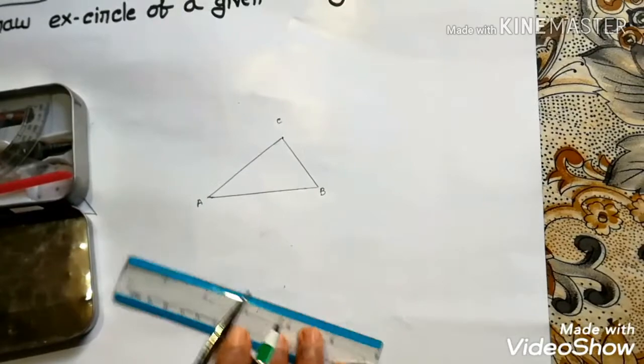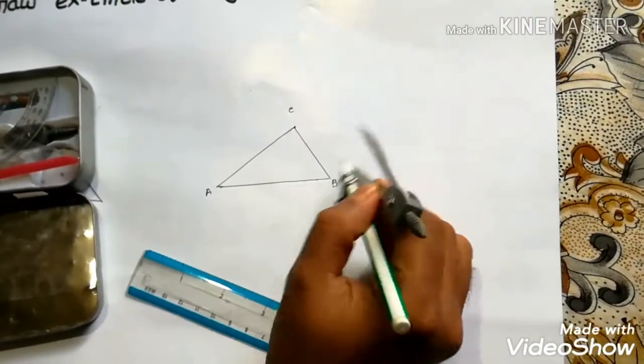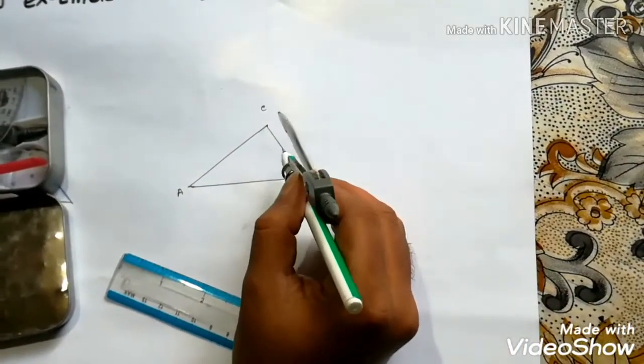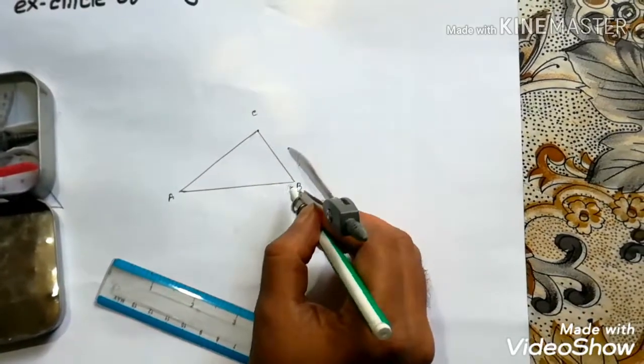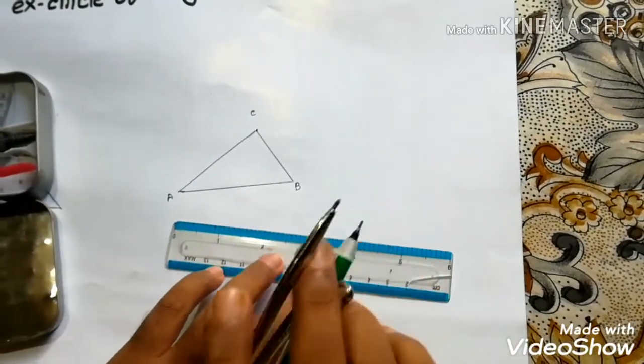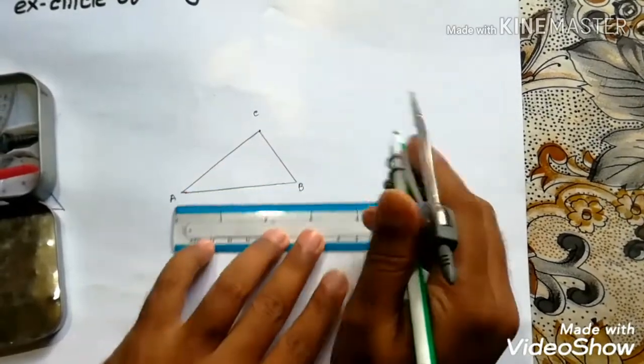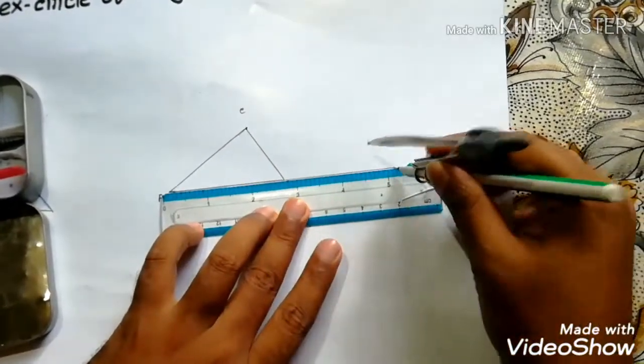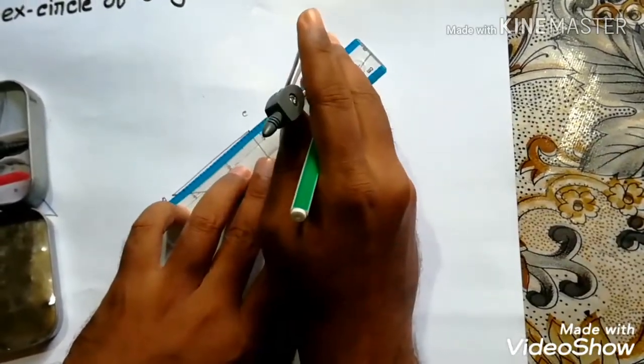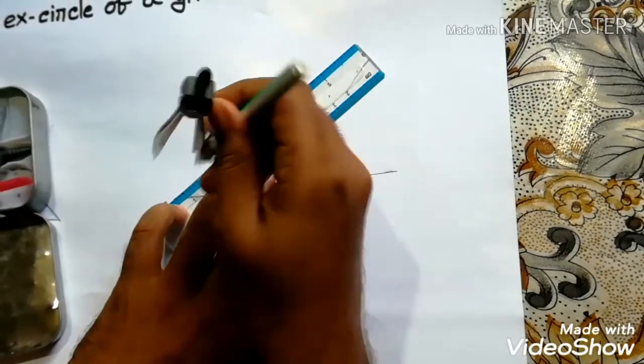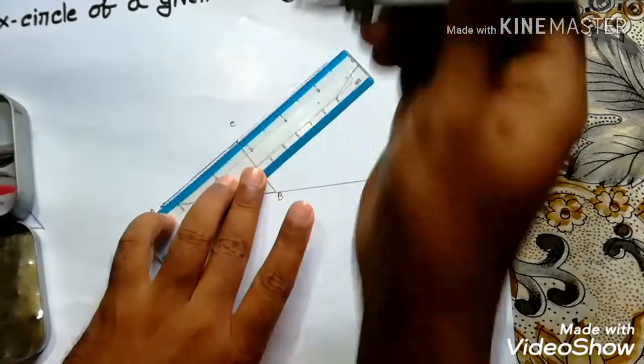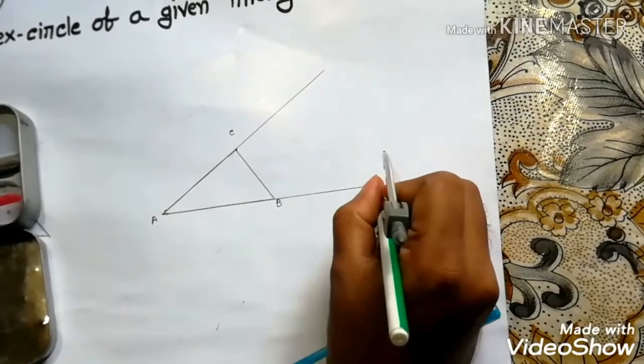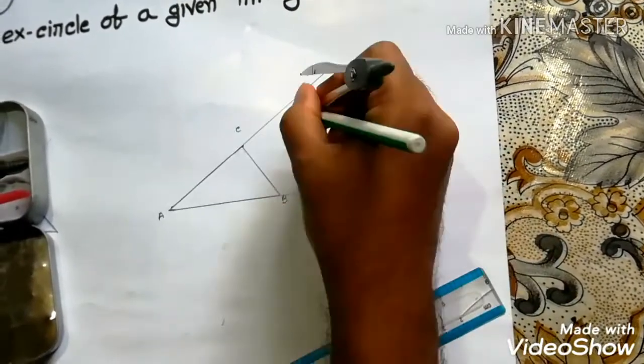Now it is required to draw its excircle, that is to draw a circle which touches one side of a triangle and the other two sides produced. So we at this moment extend AB to BD and extend AC to CF.